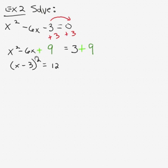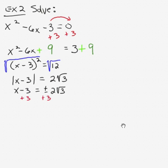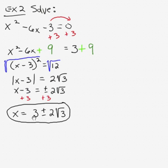We factor the left side as (x minus 3) quantity squared, and on the right side 3 plus 9 is 12. Now we're in familiar territory — this looks just like examples 1a, 1b, and 1c. Taking the square root of both sides gives the absolute value of x minus 3 equals the square root of 12, which factors as 2 times the square root of 3. Dropping the absolute value signs with plus or minus, then adding 3 to both sides, we get x equals 3 plus 2√3 and x equals 3 minus 2√3 — two irrational conjugate solutions.